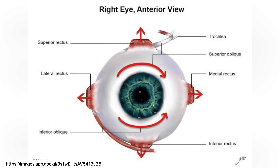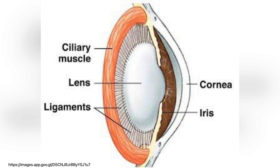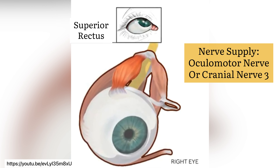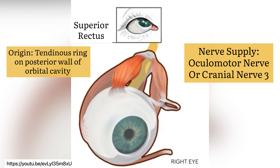Hi everybody, I am Dodivik Arma, a physical therapy intern from RT-RMF, and today we're going to talk about the ocular muscles. There are voluntary and involuntary muscles of the eyes. The extraocular muscles are made of 6 voluntary muscles, while the intraocular muscles are made of 3 involuntary smooth muscles.